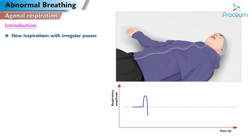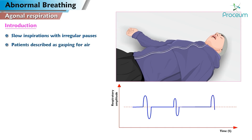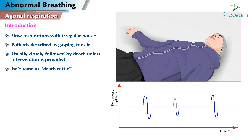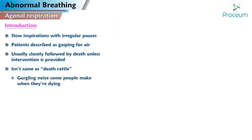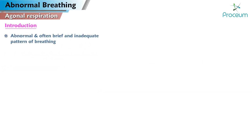Agonal respiration. Introduction. Slow inspirations with irregular pauses is called agonal breathing. Patients are often described as gasping for air. Agonal breathing is usually closely followed by death unless intervention is provided. Agonal breathing isn't the same as a death rattle, which is a gurgling noise that some people make when they are dying. Death rattle is caused by saliva or mucus collecting in the throat or chest. Agonal breathing is instead an abnormal and often brief and inadequate pattern of breathing.